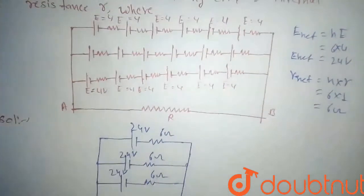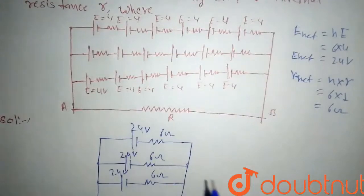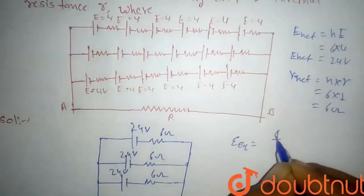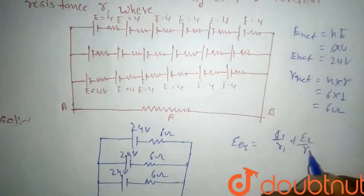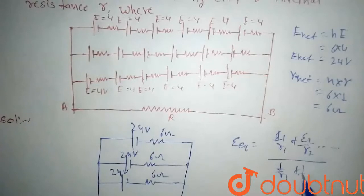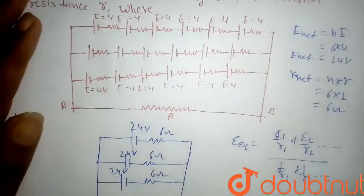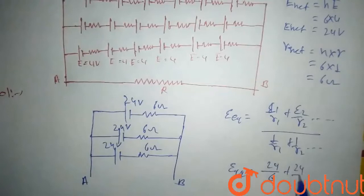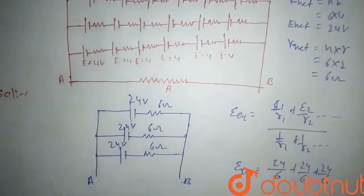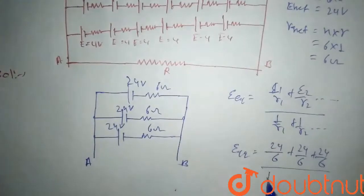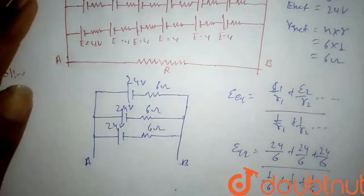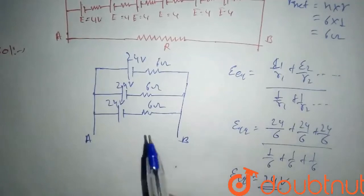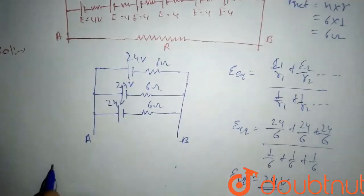The three EMF cells are connected in parallel. When cells are connected in parallel, the equivalent EMF is given by the formula: (E1/r1 + E2/r2 + ... En/rn) divided by (1/r1 + 1/r2 + ... 1/rn). Here equivalent EMF will be (24/6 + 24/6 + 24/6) divided by (1/6 + 1/6 + 1/6), which gives equivalent EMF = 24 volt.